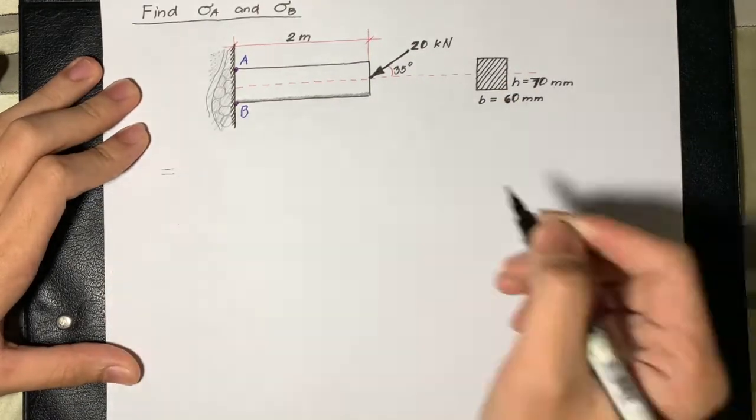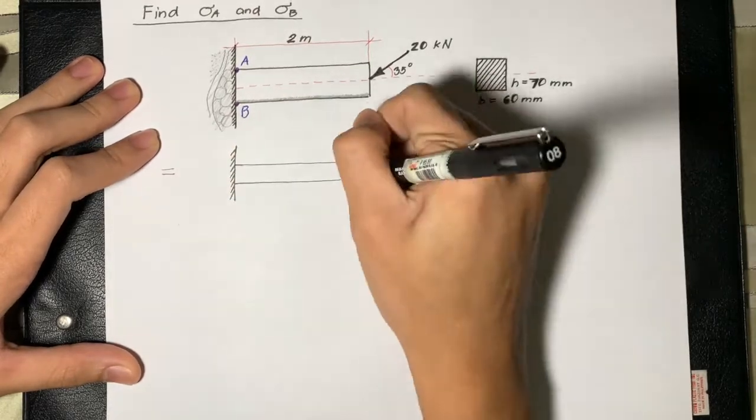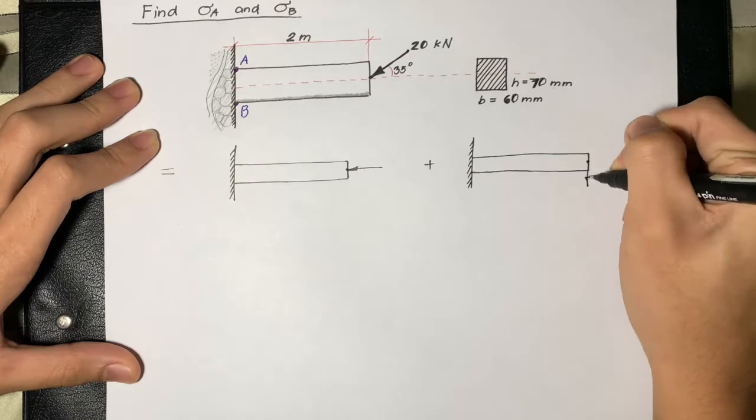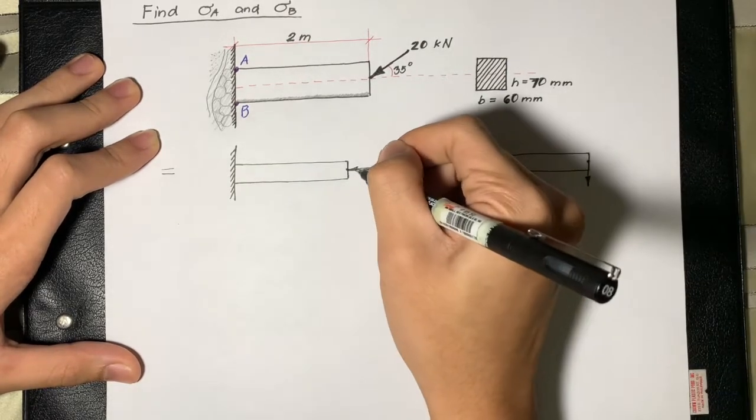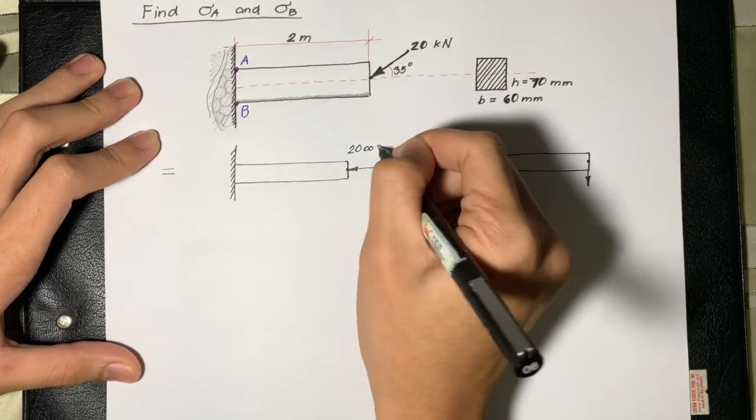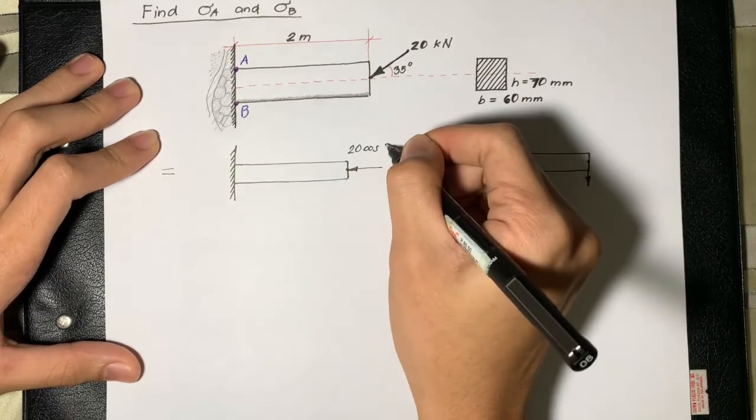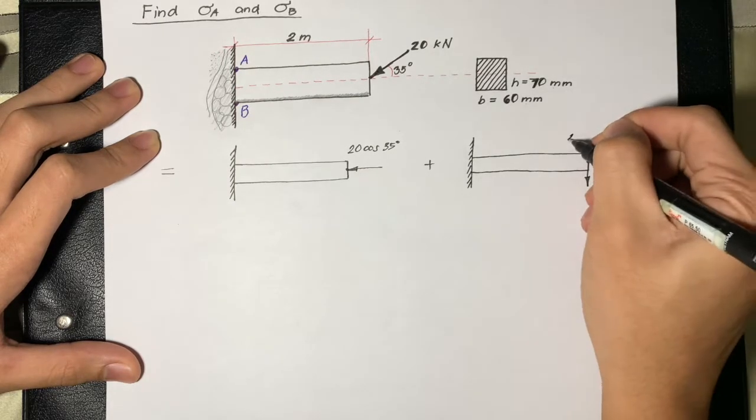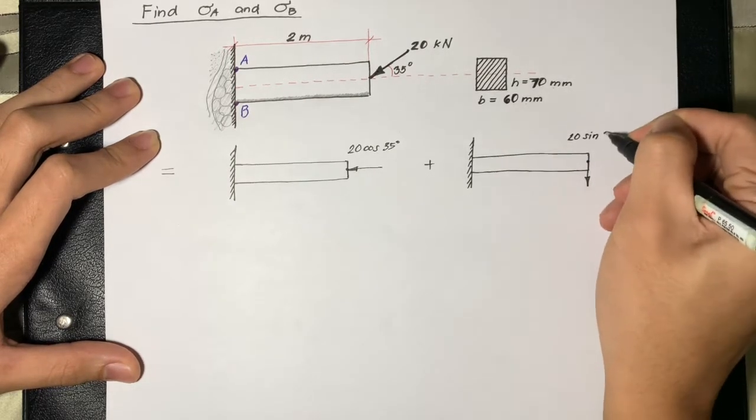The first thing we will do is draw two cantilever beams showing the horizontal and vertical components of the applied force. On the left side, we have 20 cosine 35 degrees and on the right side, we have 20 sine 35 degrees.